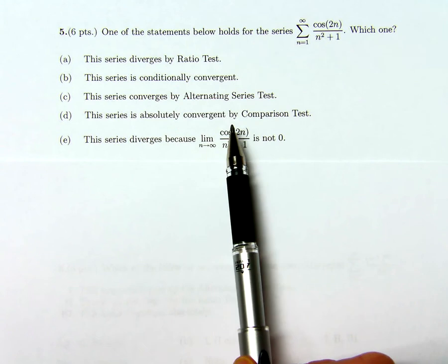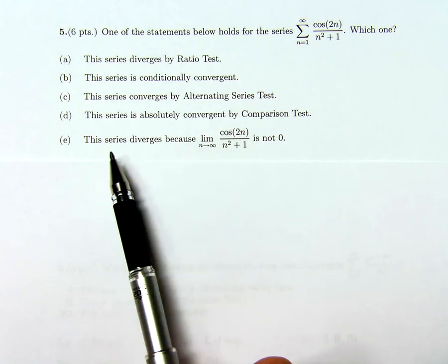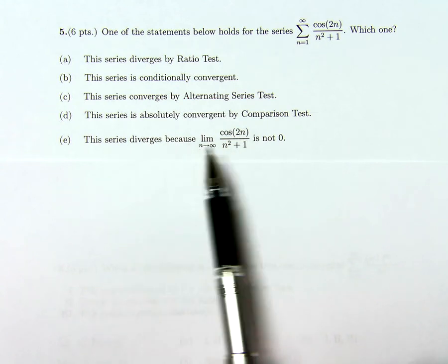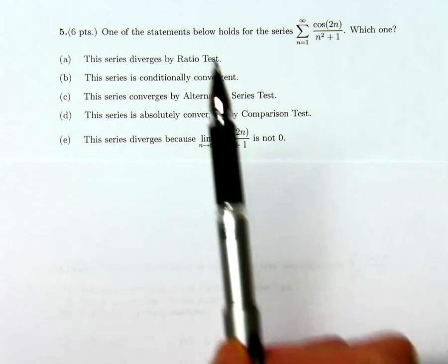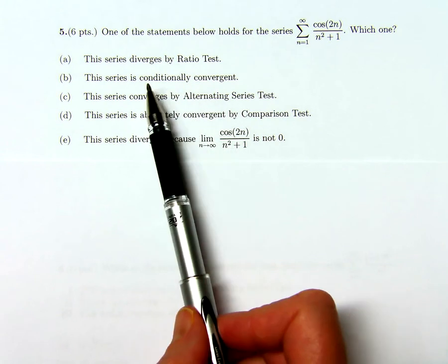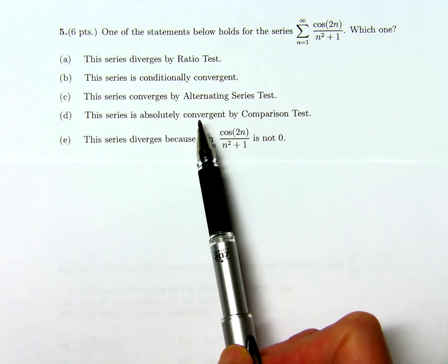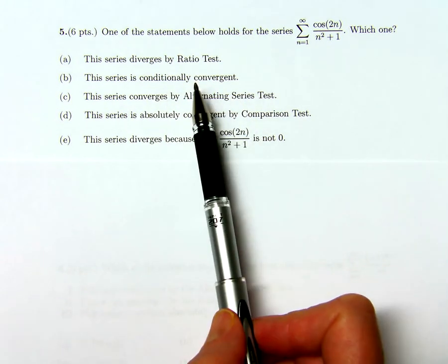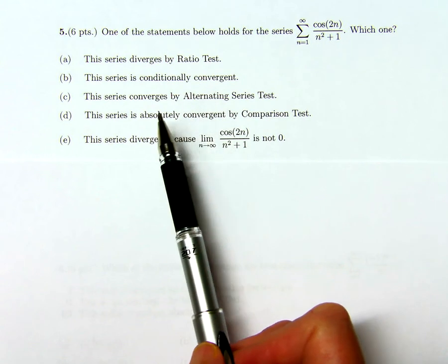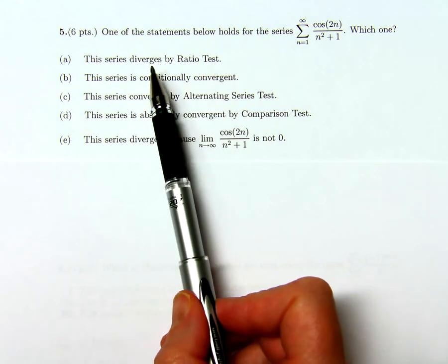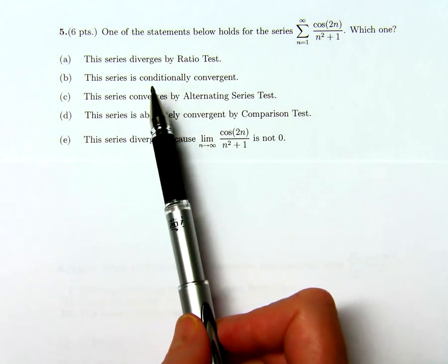If I can show that, I can automatically rule out E because that would say it diverges. I can rule out B because something that's absolutely convergent can't be conditionally convergent. And I could also rule out A because that concludes that it diverges.